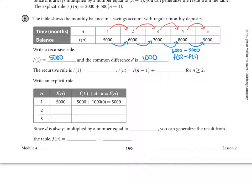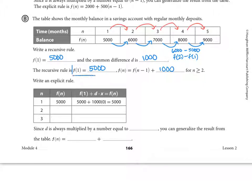They have us writing the recursive and the explicit rule. The recursive rule is: f of 1 equals 5,000. Then for any term after that — f of n equals f of n minus 1 plus 1,000. What are we adding to the previous term to get any term we want? We're always adding 1,000. This whole thing is our recursive rule. It contains two parts: f of 1 equals, and f of n equals.